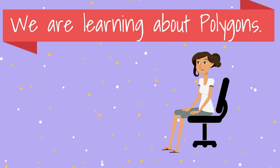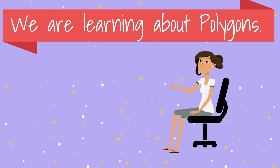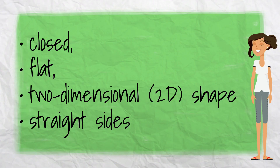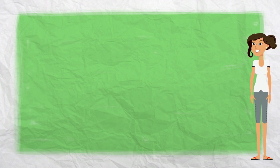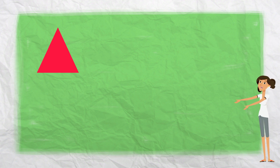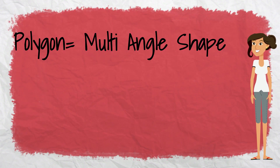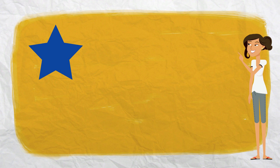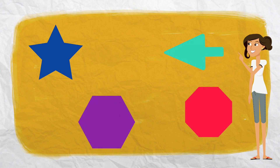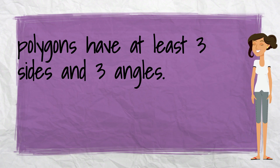Hello everybody! In today's math lesson we are going to learn about polygons. A polygon is a closed, flat, two-dimensional shape with straight sides. Examples of polygons could be triangles, squares, or rectangles. The word itself actually means a multi-angle shape. You see polygons all around us.